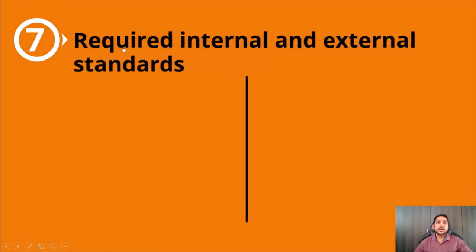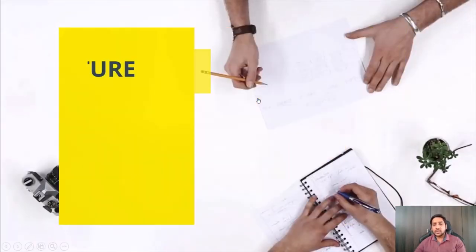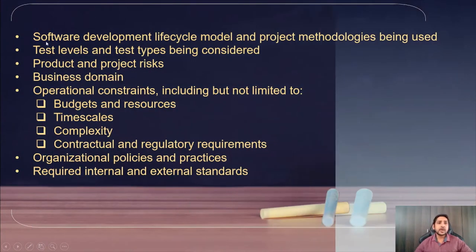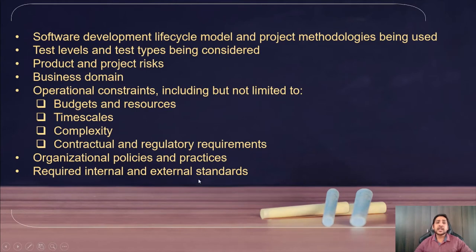The last factor is required internal and external standards. For example, ISO 26262 is for the automotive industry where the main concern is safety, whereas ASPICE is also an automotive standard focused on process-related aspects. Based on what type of standard your organization follows, the test process will change. So to summarize: the context factors are SDLC model, test levels and types, product and project risk, business domain, operational constraints, organizational policies and practices, and required internal and external standards.